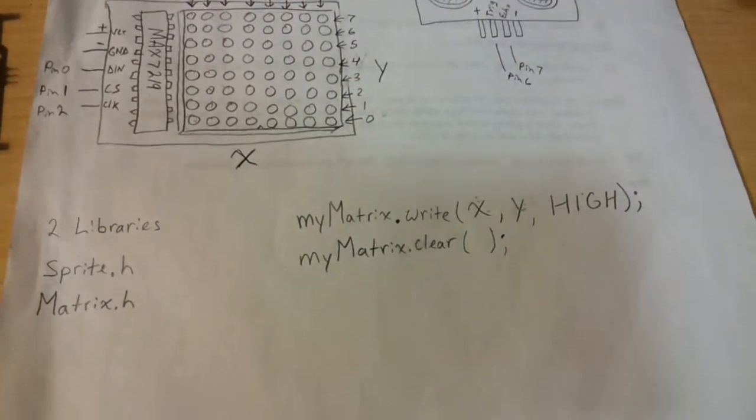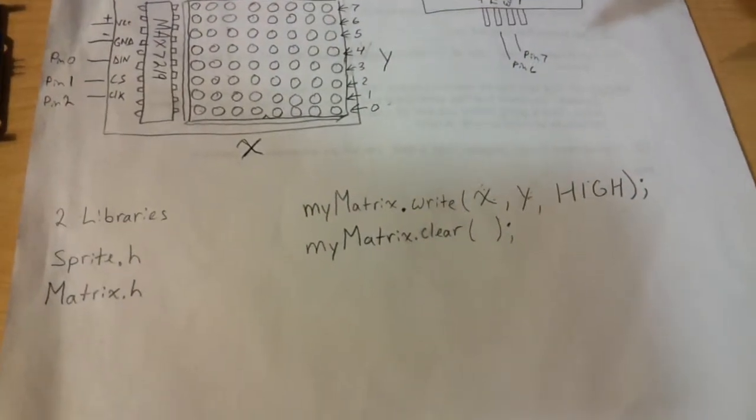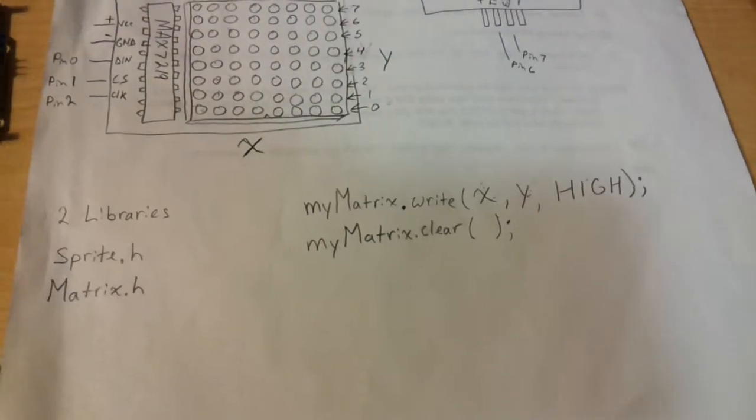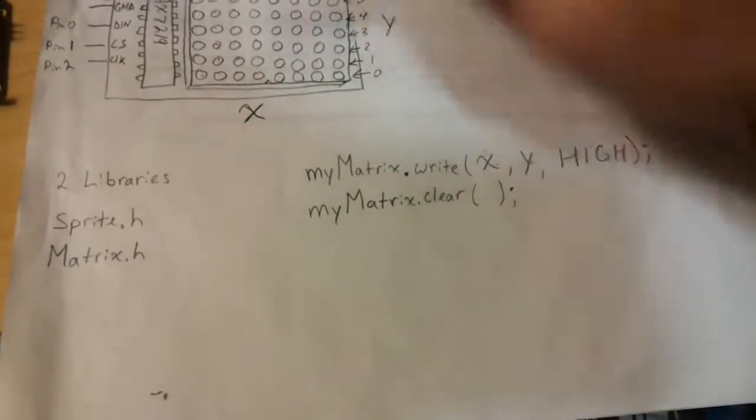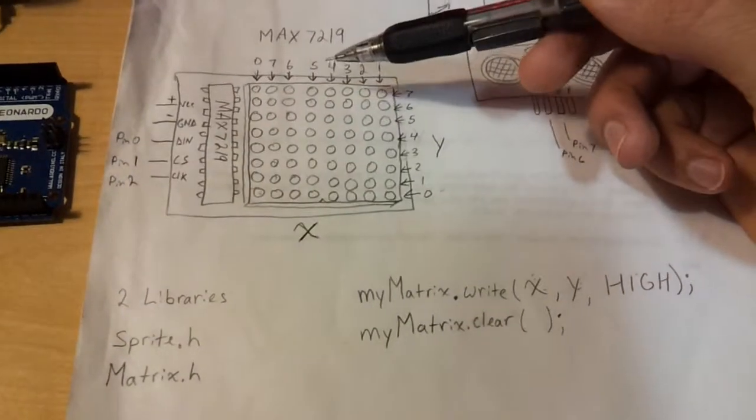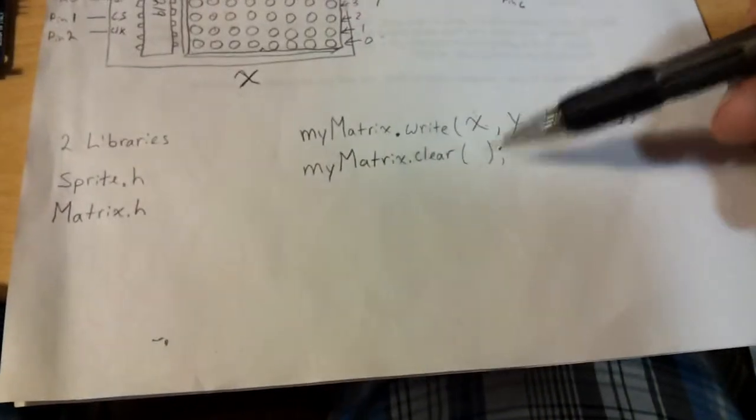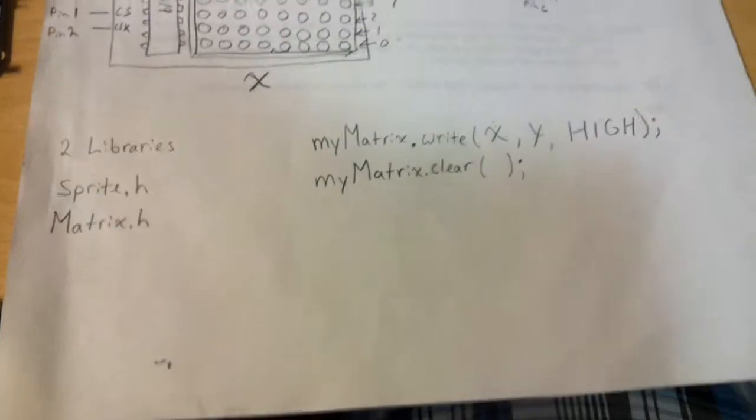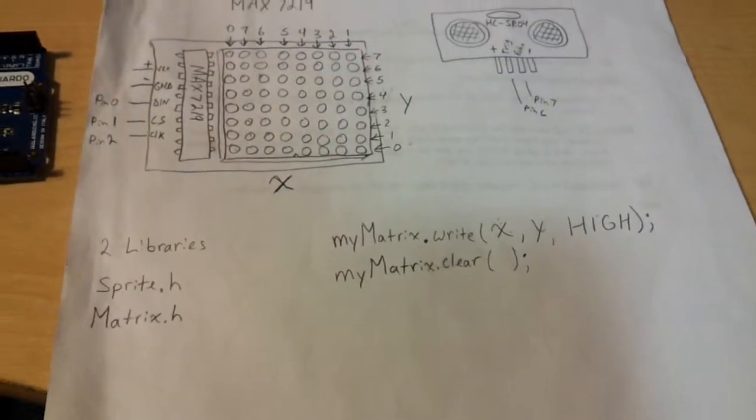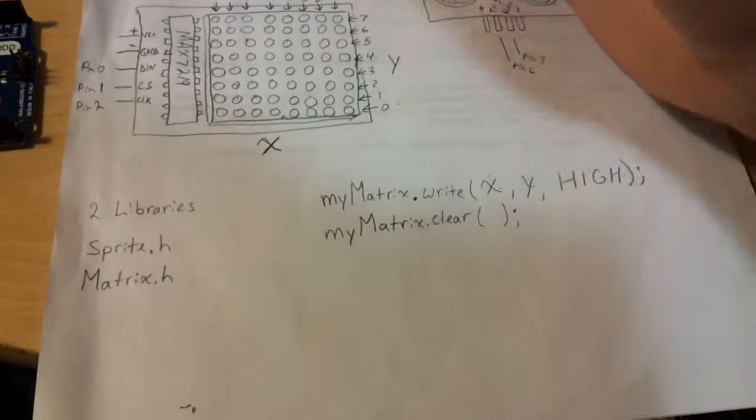Now another neat little feature this library has: if you want to clear the whole display, the whole matrix, you can write myMatrix.clear with open and close parentheses, semicolon, and that will clear the whole matrix, make it blank.